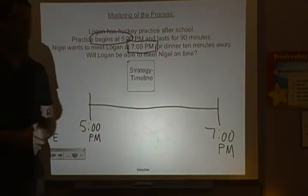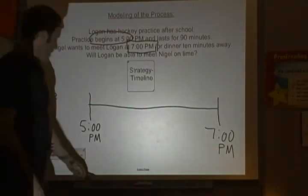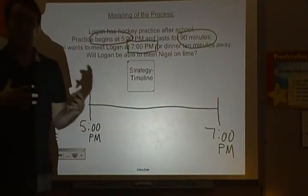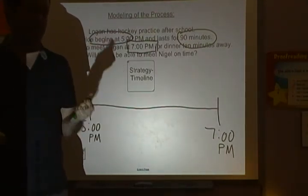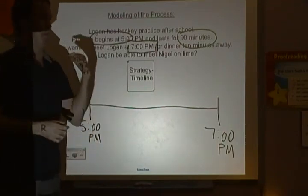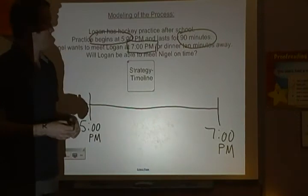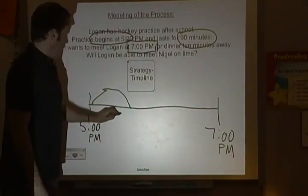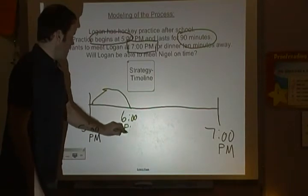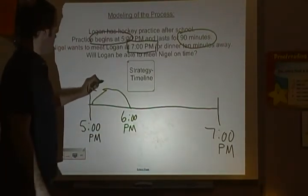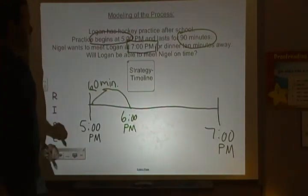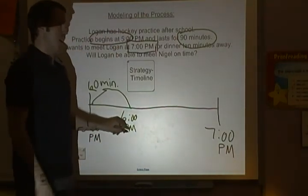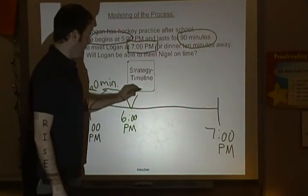The first thing I have to figure out is when does practice end. Practice lasts for 90 minutes. I know from my reminders that one hour equals 60 minutes, so that's at least one more hour. From 5 p.m., 60 minutes brings me to 6 p.m. — that accounts for 60 of those minutes. That leaves 30 more minutes: 60, 70, 80, 90. So from 6 p.m., 30 more minutes is a half hour — that's 6:30.